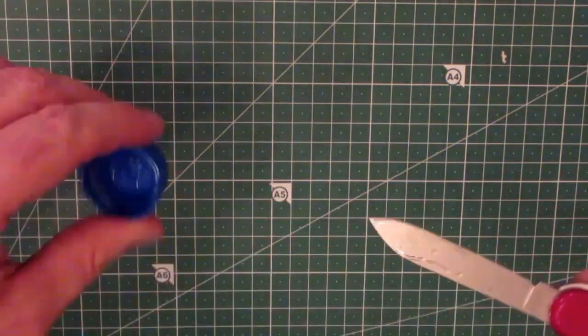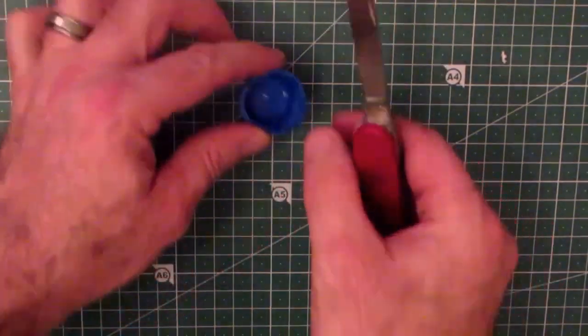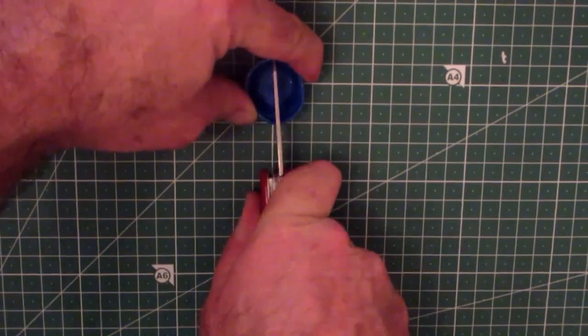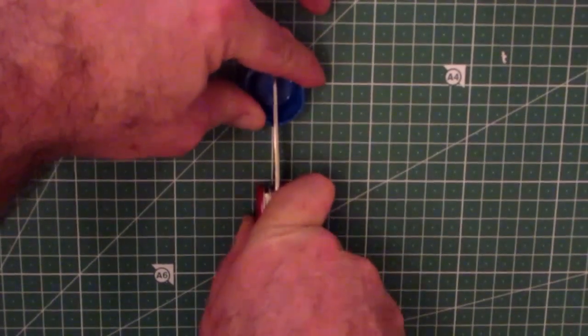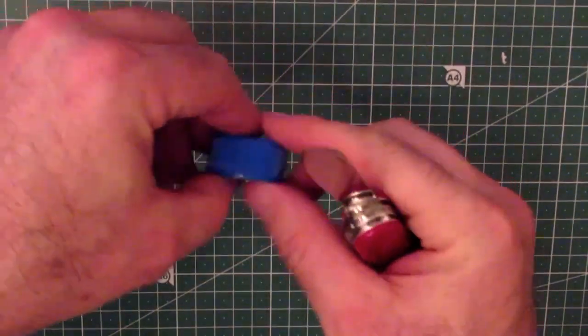Now if we imagine that those two horizontal cuts were at three o'clock and nine o'clock on a clock face, between twelve and six we'll do two vertical cuts. Okay, so that's the sides cut all the way through.